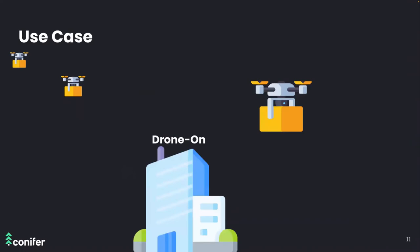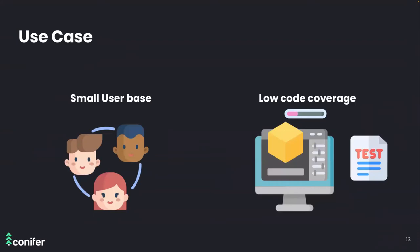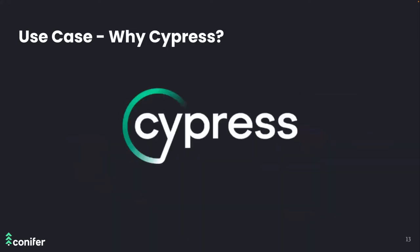Let's take a look at a hypothetical use case. Drone On is an autonomous delivery platform on its way to success in Silicon Valley. With its current small user base, developers have been able to get away with more basic front-end and less-than-ideal test coverage. A wider reach will come with greater demands for better UI, making bugs more likely, and requiring a far more comprehensive set of test suites.